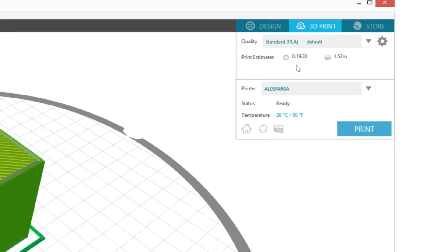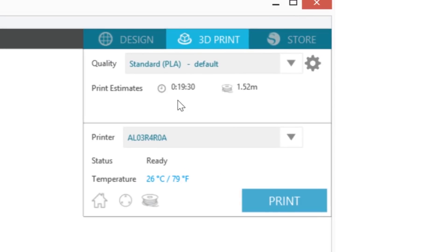In the box in the upper right-hand corner, you will see a box that shows a few things in addition to the print profile you are using: the print time estimate, an estimate of the amount of filament that will be used, which printer you are using, the connection status of the Alta, and the current temperature of the print head.